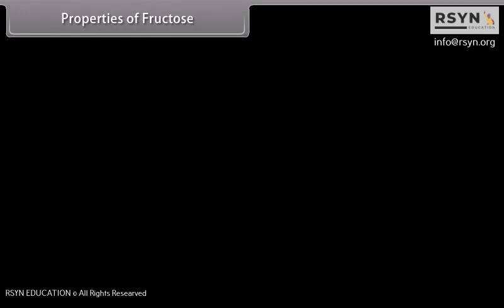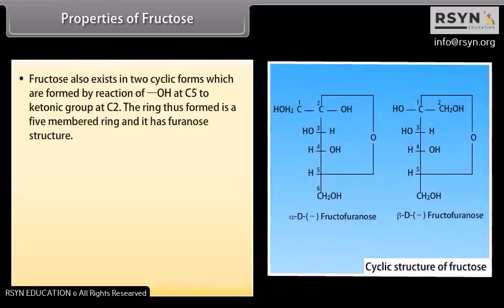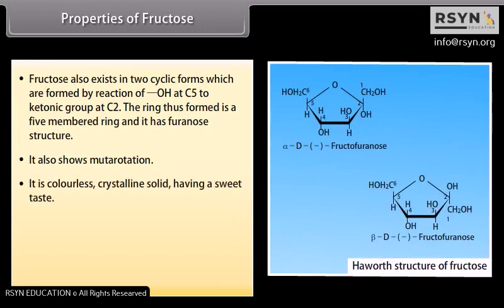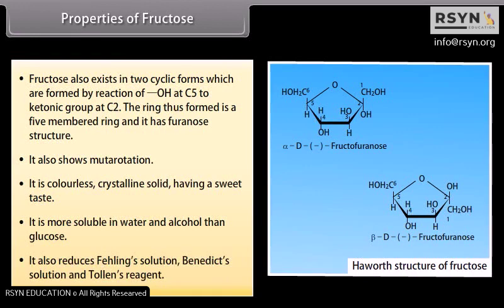The important properties of fructose are: it exists in two cyclic forms formed by reaction of OH at C5 with the ketonic group at C2, forming a five-membered furanose ring. It also shows mutarotation. It is a colorless crystalline solid with a sweet taste. It is more soluble in water and alcohol than glucose. It also reduces Fehling's solution, Benedict's solution, and Tollens' reagent.